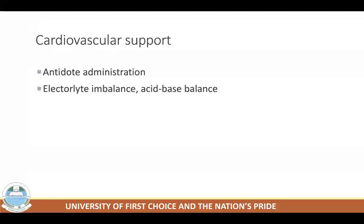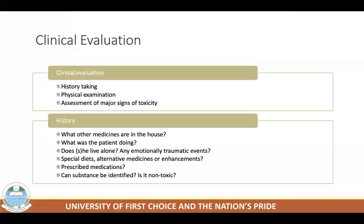Following cardiovascular support, clinical evaluation is performed in three steps: thorough history-taking, physical examination, and assessment of major signs of toxicity. Poisoning should be suspected in any patient who presents with multi-system disturbance until proven otherwise. A patient with acute poisoning often presents with coma, cardiac arrhythmia, seizures, metabolic acidosis, and GI disturbance, either alone or as a symptom complex.